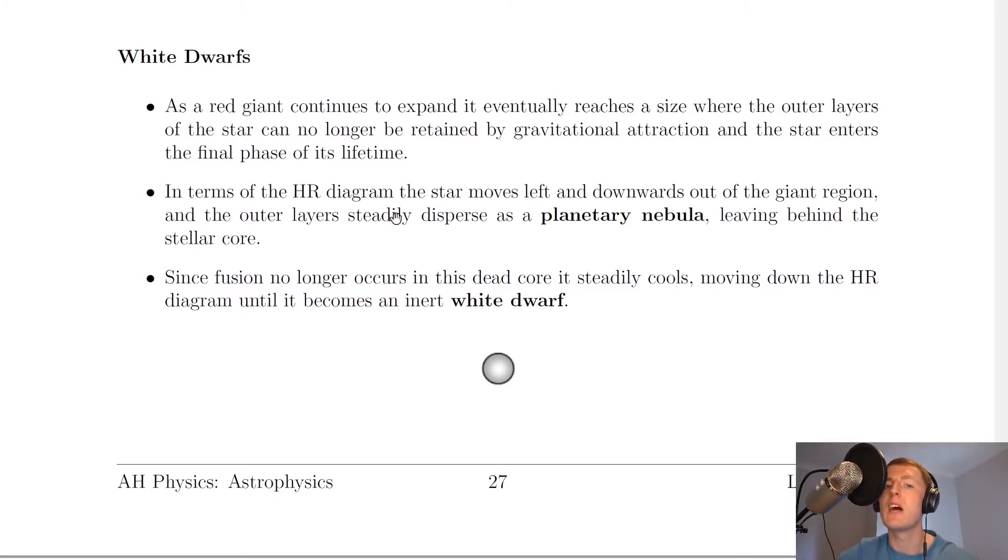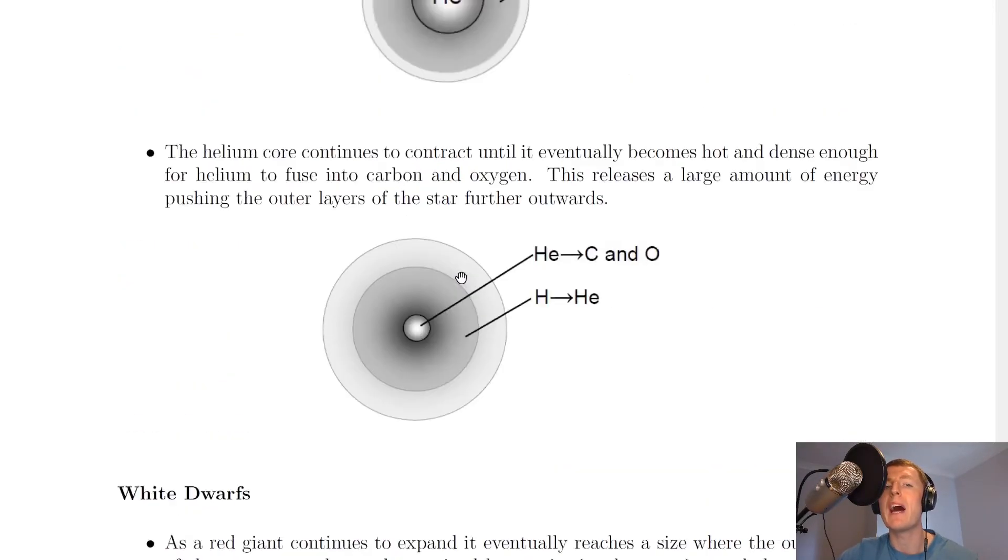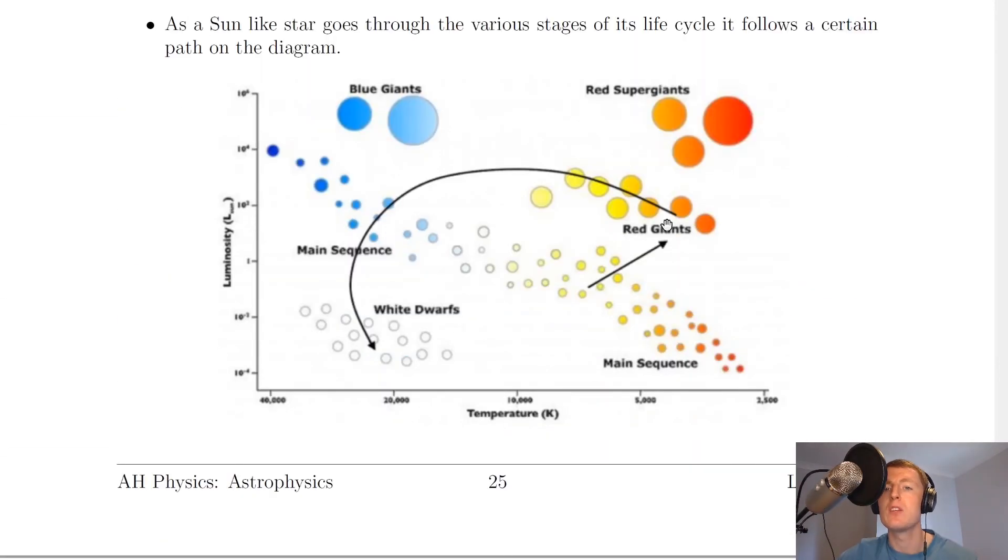In terms of the Hertzsprung-Russell diagram, the star moves left and downwards out of the giant region. If we look back at our Hertzsprung-Russell diagram, you'll see that when we go from red giant to white dwarf, it moves along here towards the lower left.